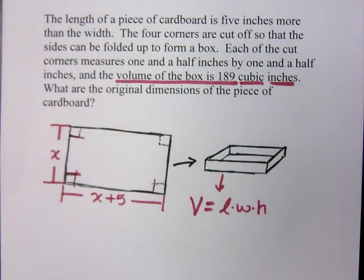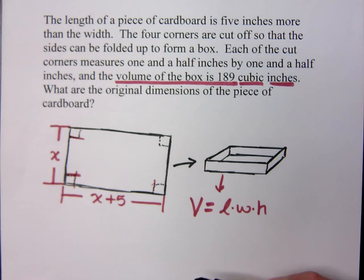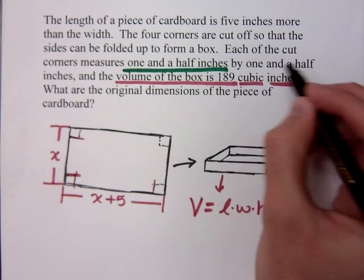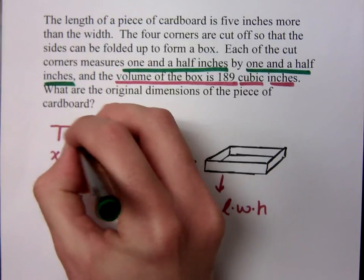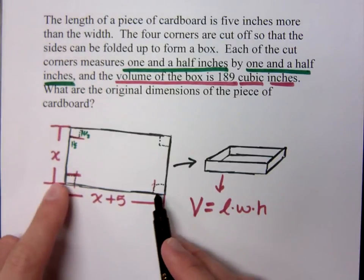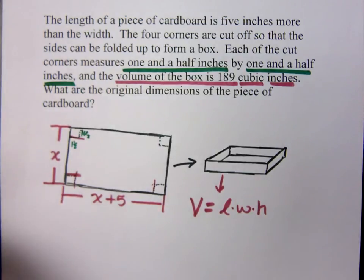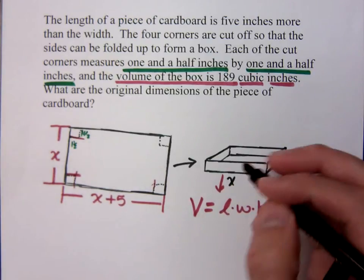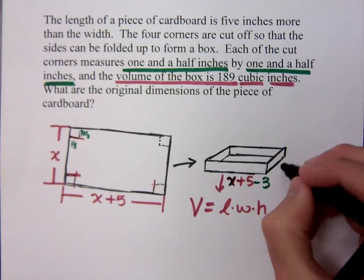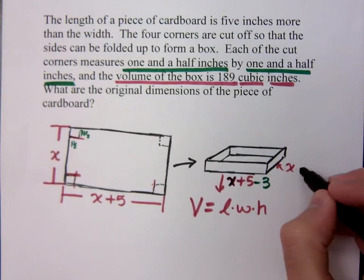Now how big are these corners? What are the dimensions of these corners that I'm cutting out? One and a half. So these are all corners cut off, each is one and a half by one and a half. And so what you guys were saying is right, I'm basically cutting off one and a half inches on each side which amounts to three from each. So this side right here was X plus 5 but then I took off three. And this piece was X but I'm also taking away three.